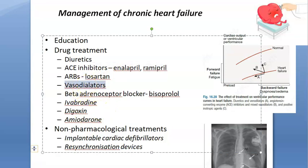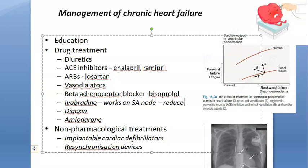Vasodilators such as nitrates are used. Then ivabradine — it works on the SA node (sino-atrial node) in the heart, and it will reduce heart rate, causing bradycardia.